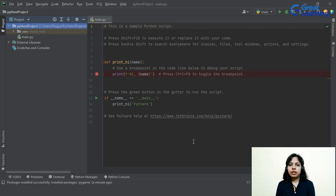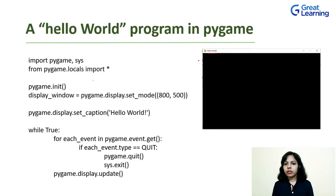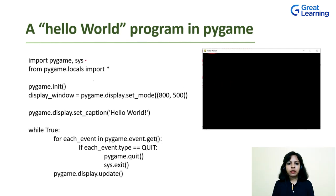There are two basic installation steps: one is using the pip command and the other is using an IDE. For the display window — you can see here on the right side a display window which will show Hello World in its title bar as a caption. This is the first step of any game development: you have to create a game window, and then other things such as graphics, images, and sounds will be added to this window. The first statement in the code is import pygame and sys. We import these modules because we are going to use various functions defined inside them in our program.